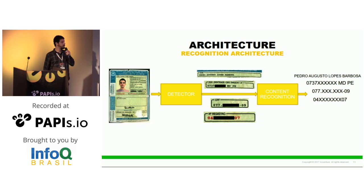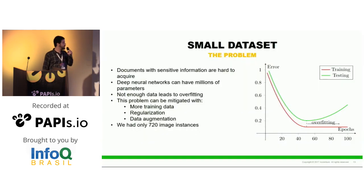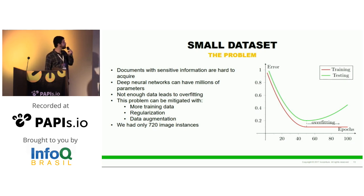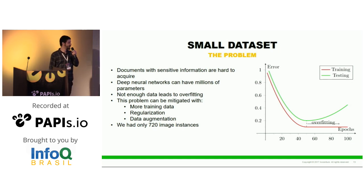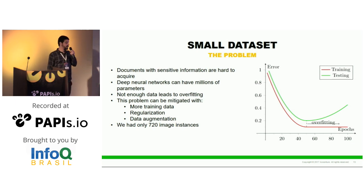We separated the fields into numbers and names — we had more difficulties with names. The problem is that we had very few images; our dataset had only 700 images, which is not enough for a large model like the one we were using. It's difficult to get more data because document information is sensitive and clients usually won't provide much of it. Deep neural networks can have a lot of parameters to train, so with small data and many parameters, that leads to overfitting.